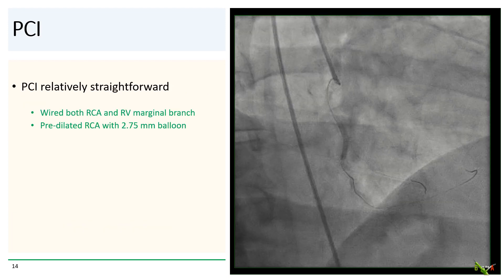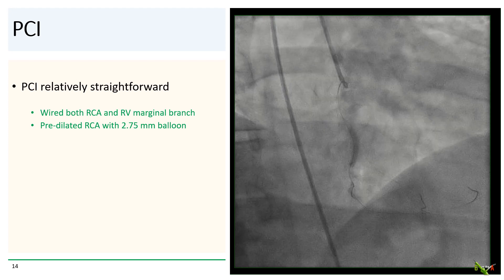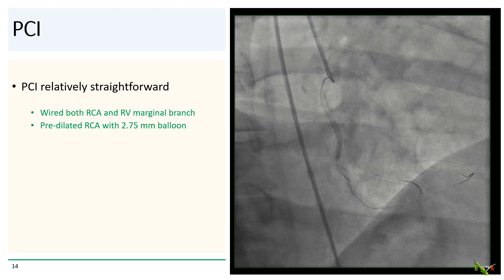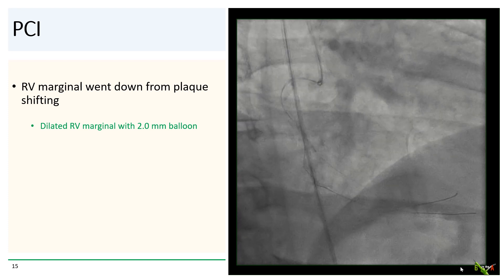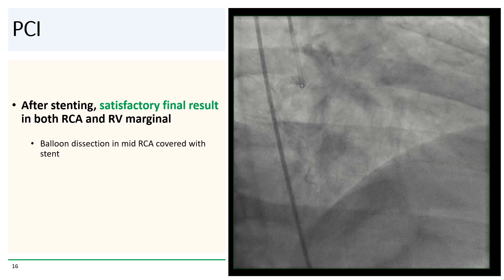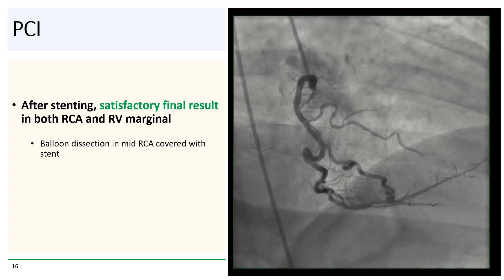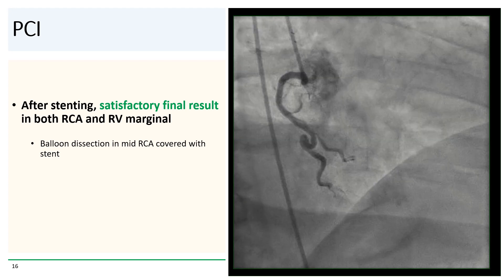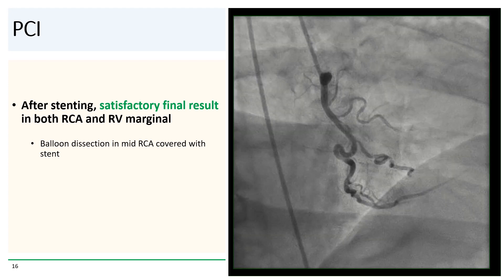The intervention was relatively straightforward. We wired both the RCA and the RV marginal branch and pre-dilated the RCA with a 2.75 millimeter balloon. After pre-dilation, the RV marginal branch actually went down, so we were thankful that there was a wire in place already. We dilated the RV marginal branch with a 2.0 millimeter balloon to re-establish flow. After stenting and post-dilation, we have a satisfactory final angiographic result in both the RCA and the RV marginal branch. There was a balloon dissection in the mid-RCA that is now nicely covered by the stent.